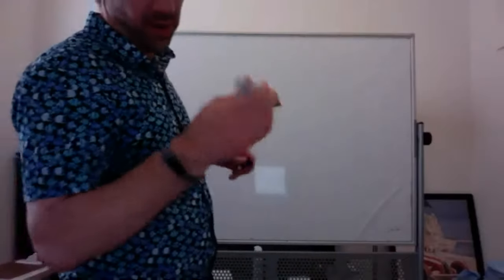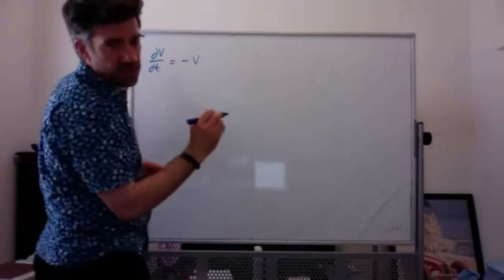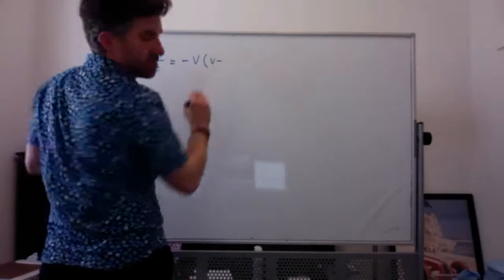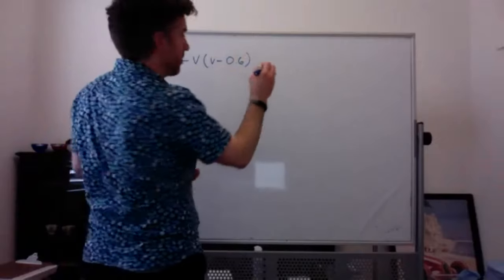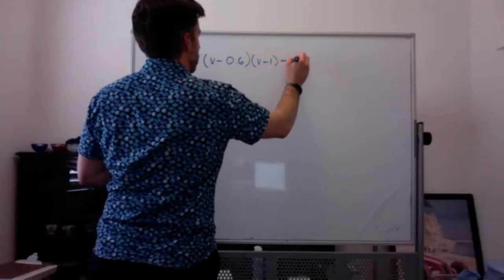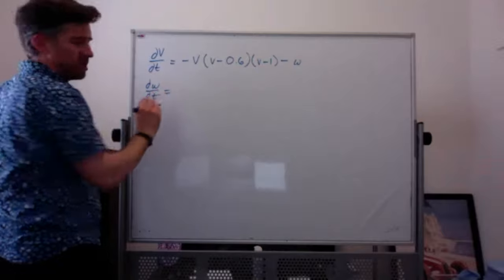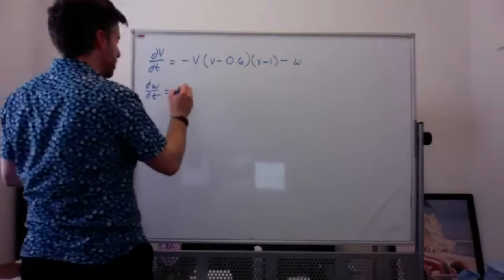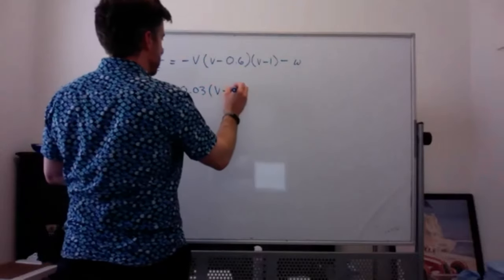Let's assume the following example of the FN model. The equations are: dV/dt = −V(V − 0.6)(V − 1) − W, and dW/dt = 0.03(V − 0.6W). Assume W(0) = 0. For what initial values is V(t) increasing?